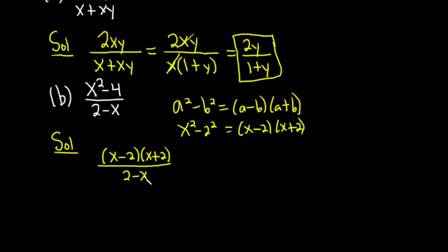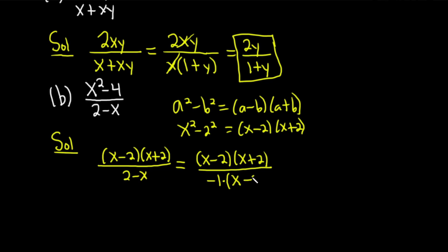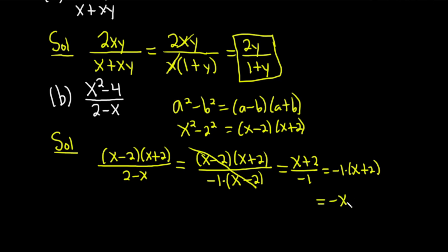It would be really nice if the denominator was x minus 2, so we're going to make that happen. We have x minus 2 times x plus 2 in the numerator, and then we factor out a negative 1 from the denominator. So 2 minus x becomes negative 1 times x minus 2 — because negative 1 times x is negative x and negative 1 times negative 2 is positive 2. The x minus 2 factors cancel, leaving x plus 2 over negative 1, which gives negative x minus 2.